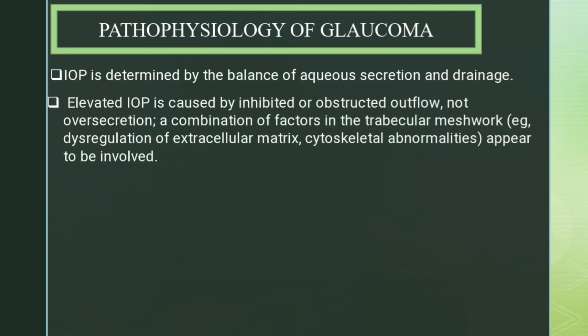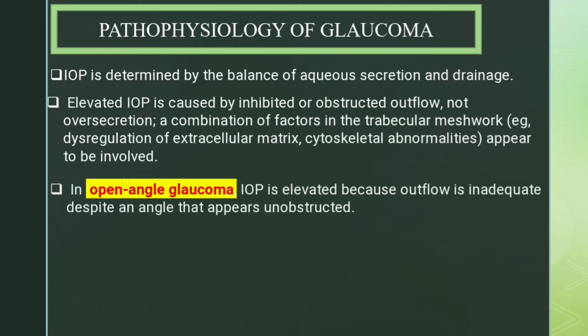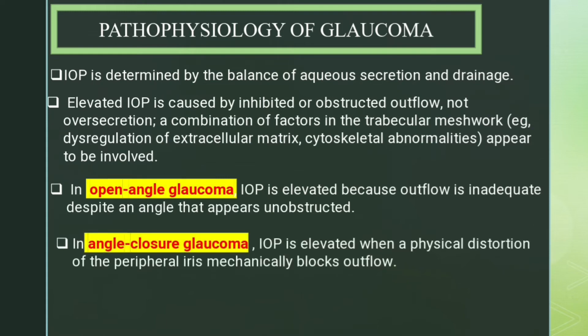A combination of factors in the trabecular meshwork — for example, dysregulation of the extracellular matrix and cytoskeleton abnormalities — appear to be involved in open-angle glaucoma, where intraocular pressure is elevated because outflow is inadequate despite an angle that appears unobstructed. In angle-closure glaucoma, intraocular pressure is elevated when physical distortion of the peripheral iris mechanically blocks the outflow of aqueous humor.